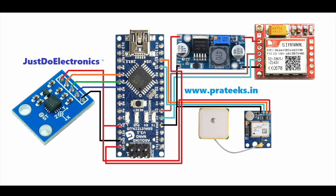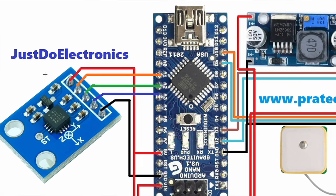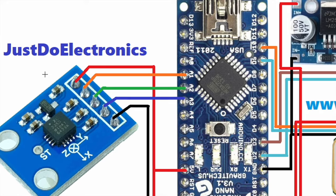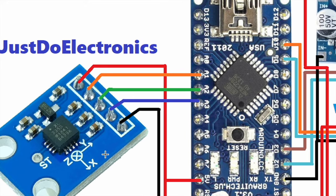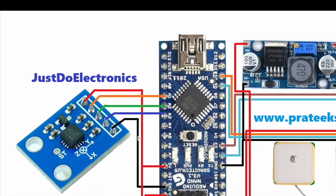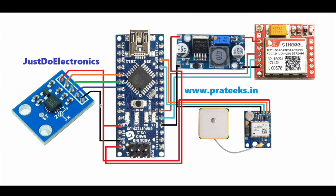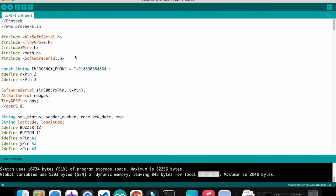The GSM is connected to pin numbers 2 and 3. On the left side I use the ADXL345 sensor, which is an analog sensor connected to pins A1, A2, and A3. This is the final circuit diagram — if you want it, please visit my website.